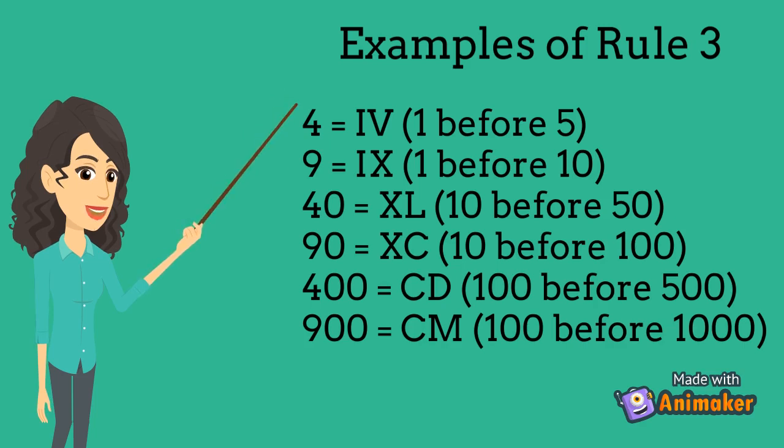400 equals CD, 100 before 500. 900 equals CM, 100 before 1000.